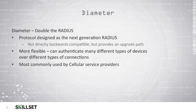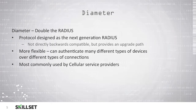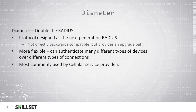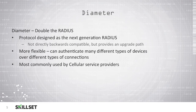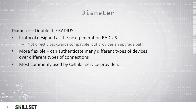Diameter was developed as an improvement to RADIUS. An easy way to remember this is that in geometry the diameter is double the radius. This protocol was designed as a next generation of RADIUS, but it is not backwards compatible with RADIUS. It does offer an upgrade path to easily upgrade from RADIUS to Diameter when necessary. It is much more flexible because it can authenticate with a lot of different types of devices over different types of connections, and Diameter is mostly used by cellular service providers to authenticate their users.